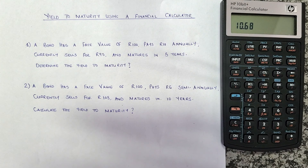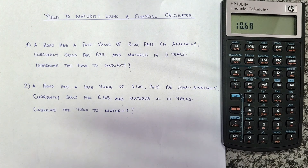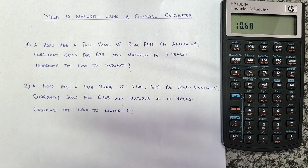The calculator gives us a yield to maturity of 10.68%. If the bondholder holds on to this bond for the duration of 10 years, the yield to maturity is 10.68%. If you'd like to learn more about yield to maturity, the coupon rate, and the current yield, you'll find the links in the description below. If you've gained value, consider subscribing to the channel, liking this video, and sharing it with those you think it might help.